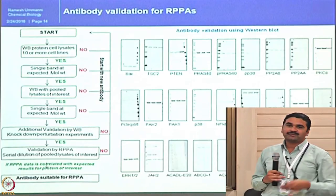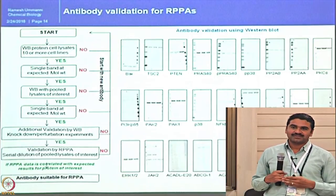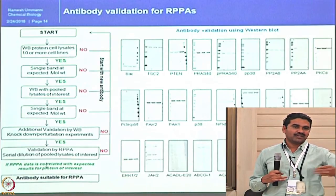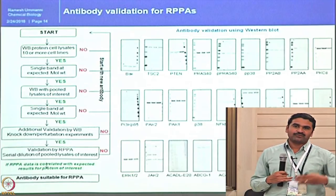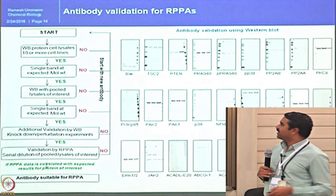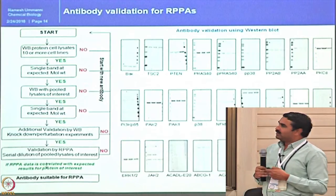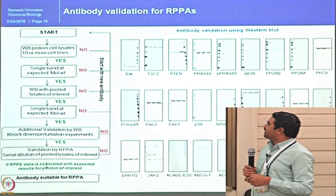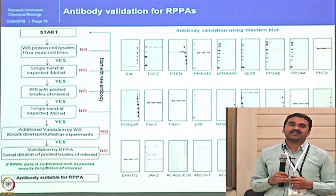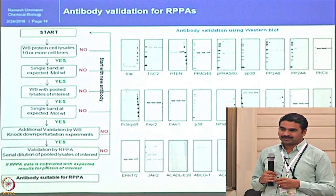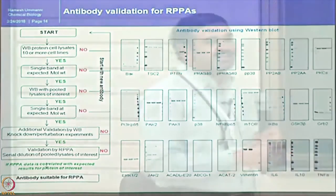In RPPA validation, we validate by serial dilution of samples to check whether the antibody can detect twofold, fivefold, or tenfold dilutions properly. If the RPPA data correlates with expected results for the protein of interest, we declare it useful for RPPA. Every antibody then gets one of three codes: go ahead, use with caution, or not suitable — these are the three terms used in the RPPA community.